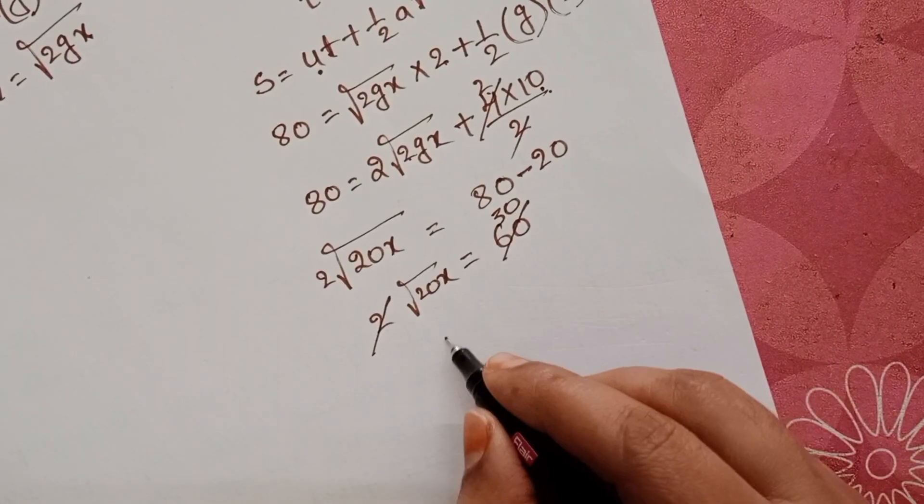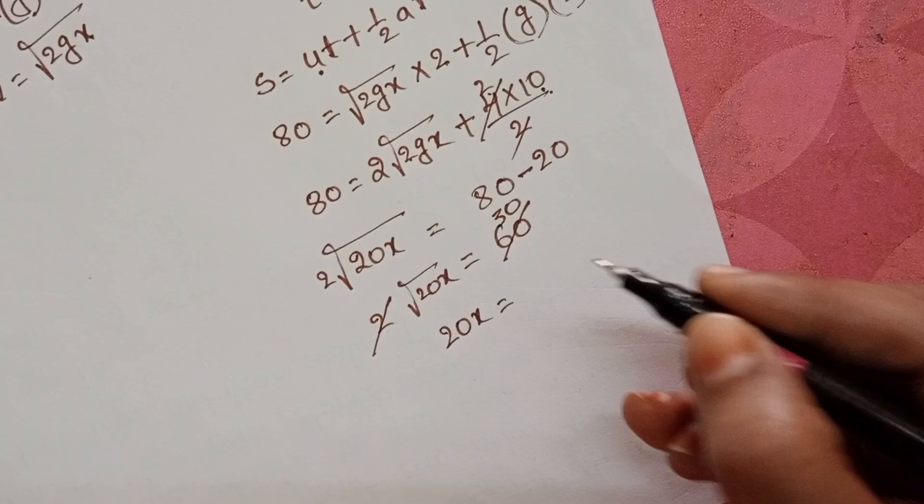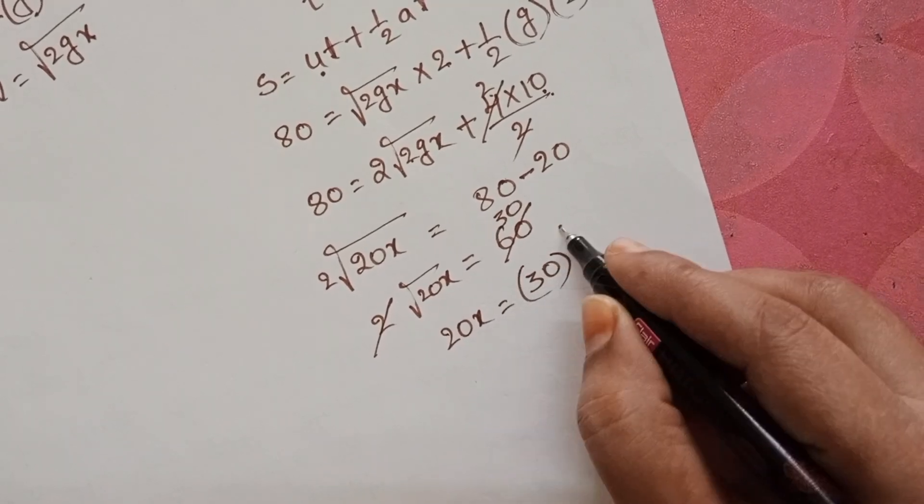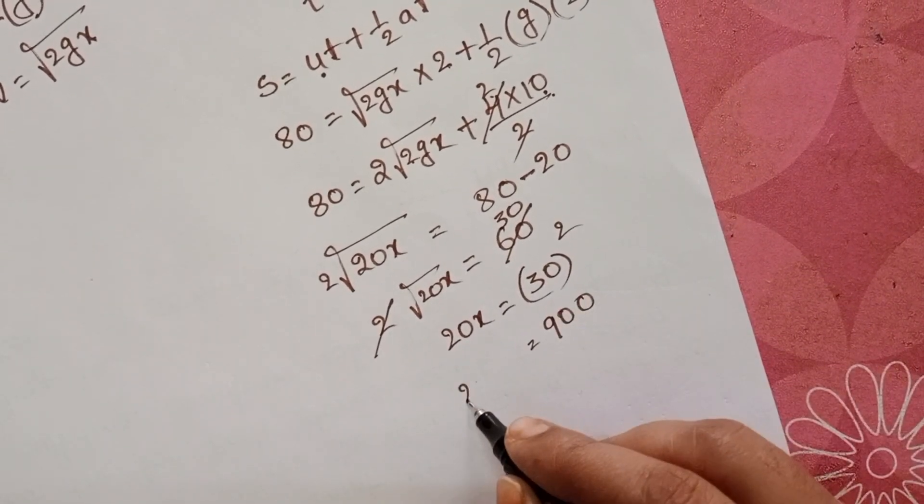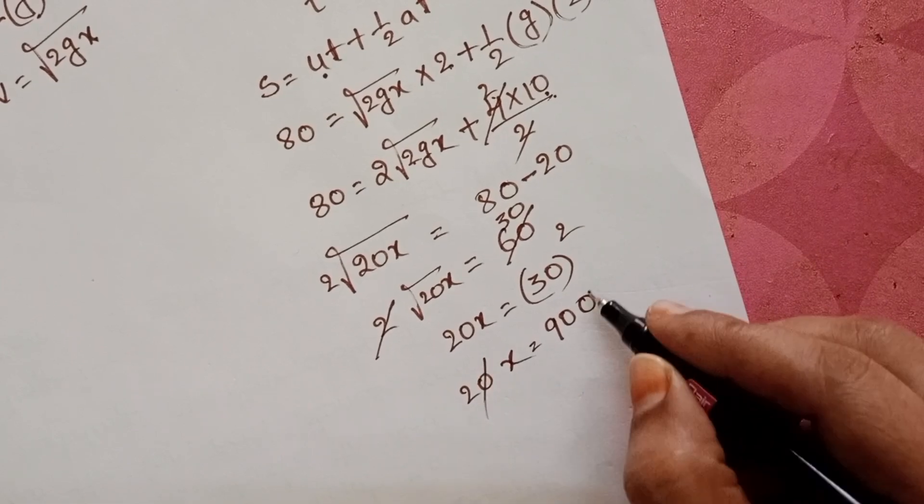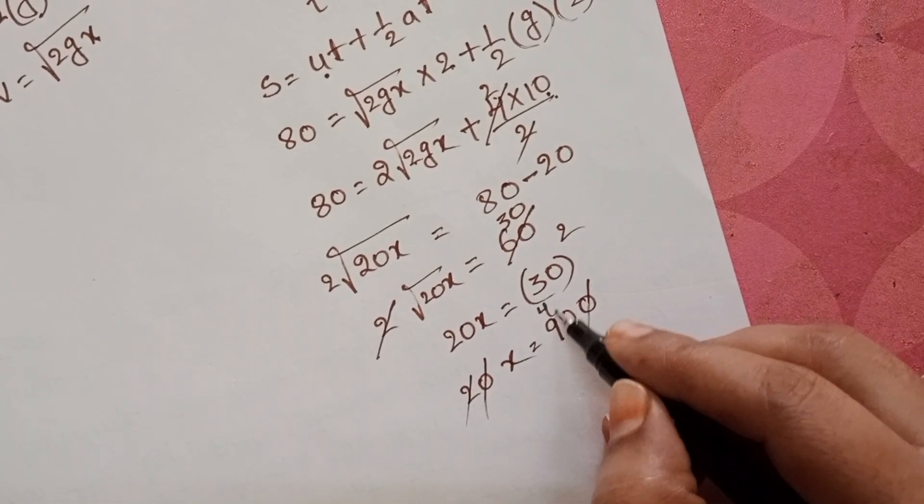2 into square root of 20X equals 30. Now squaring on both sides, 20X equals 30 whole squared. 30 whole squared equals 900. X equals 45.